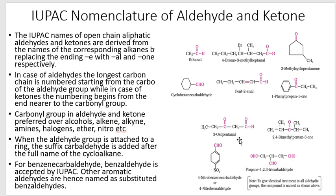Similarly, in the next example, numbering starts from one end: 1, 2, 3, 4, 5. We check both possible numbering directions and they give the same result. So the name is 2,4-dimethylpentan-3-one.